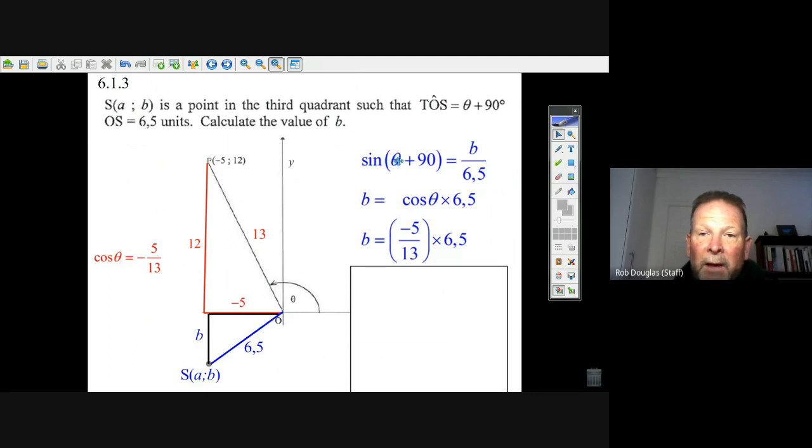The sine of theta plus 90 is this negative number, and we knew it was negative, negative 5 over 13. The cosine of theta we've done already is negative 5 over 13. Well, if we multiply it out, 6.5 divided by 13 is a half, a half of negative 5, that's your answer.